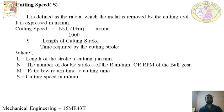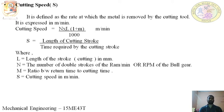N is multiplied by the total cutting speed to get the machining time. M equals the ratio of cutting stroke to the return stroke. There is always a ratio between the cutting stroke and the return stroke because the cutting stroke takes much more time compared to the return stroke, which is a quick return. S is the cutting speed in meters per minute.